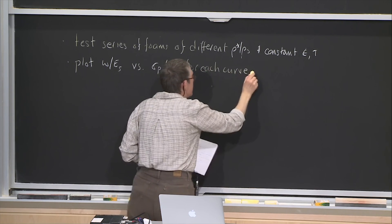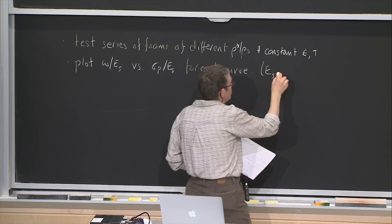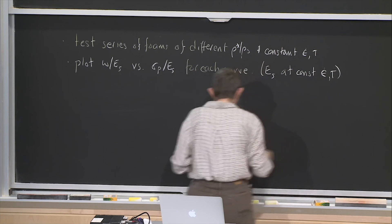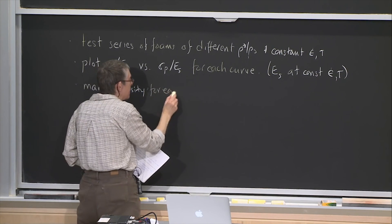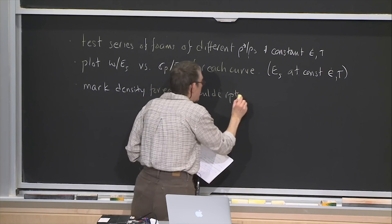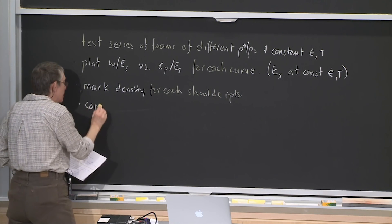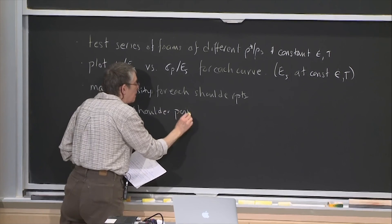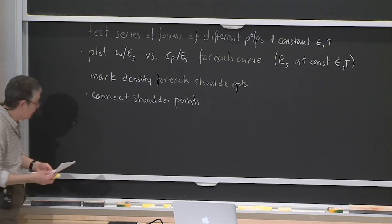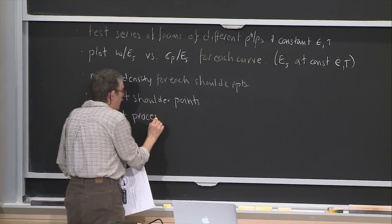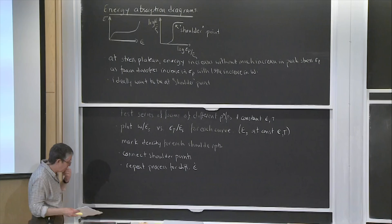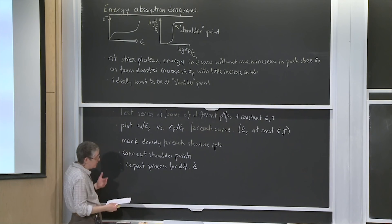Typically, the solid modulus is taken at a constant strain rate and temperature. Then mark the density for each shoulder point and connect them. Repeat the whole process for different strain rates, then draw the final diagram that has a family of lines describing the shoulder points for different densities and different strain rates. You could treat different temperatures in the same way — hold the strain rate constant and vary the temperature.